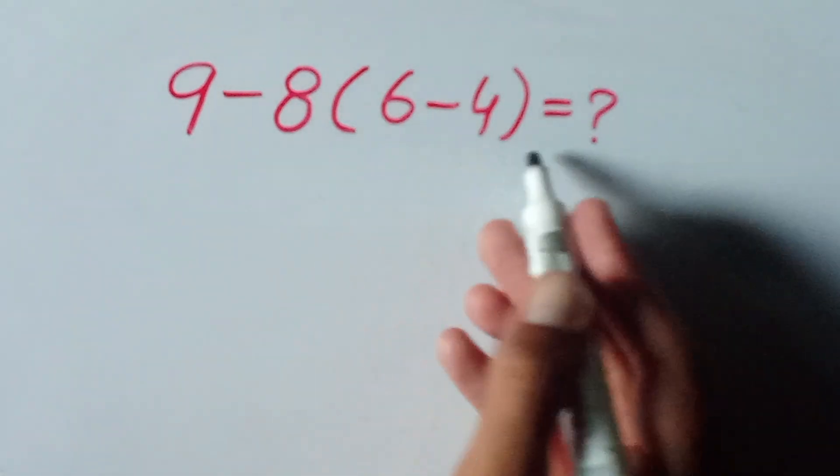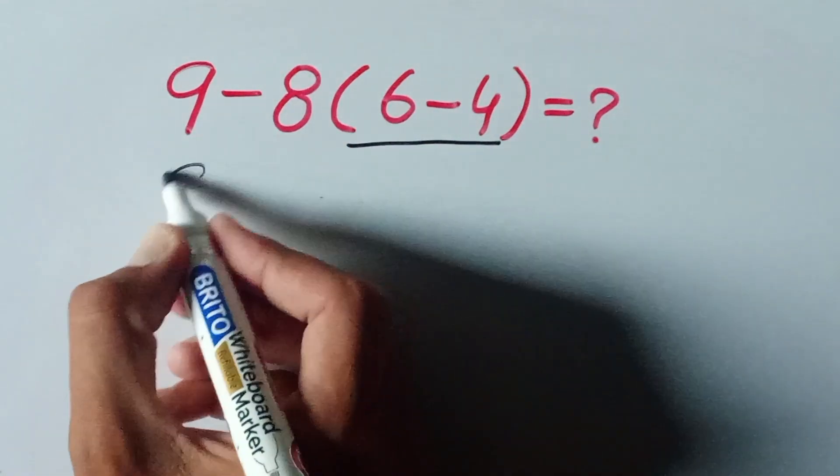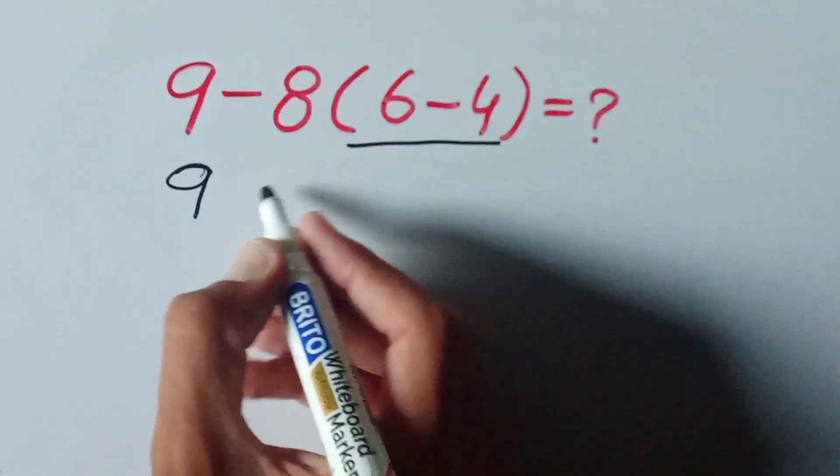So I can solve firstly parenthesis. So 9 minus 8, parenthesis 6 minus 4 equals 2.